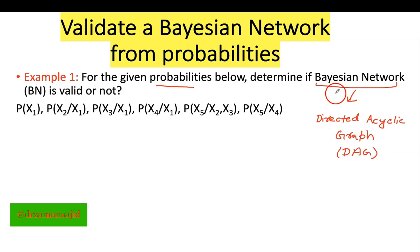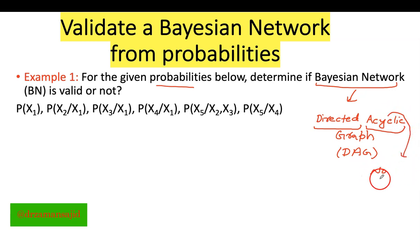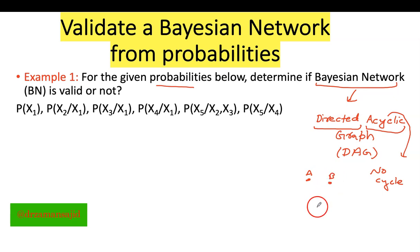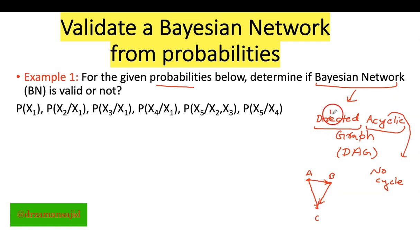It is also called a DAG. This means that if a model is a Bayesian network, it must have some direction between the nodes — without direction it cannot be a Bayesian network. It must also be acyclic, meaning there should be no cycle in the graph. Let me explain with an example: I have node A, node B, and node C. A is going into C, A is going into B, and B is going into C. As you can see, there are directions — arrows going from A to B, B to C, and A to C.